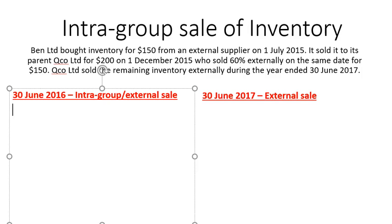We've got a second example here for inventory. Ben Ltd bought inventory for $150 from an external supplier on 1 July 2015. It sold it to its parent, Qco Ltd, for $200 on 1 December 2015. They then sold 60% externally on the same date for $150. Qco Ltd sold the remaining inventory externally during the year ended 30 June 2017.